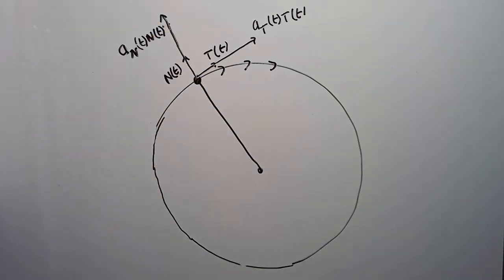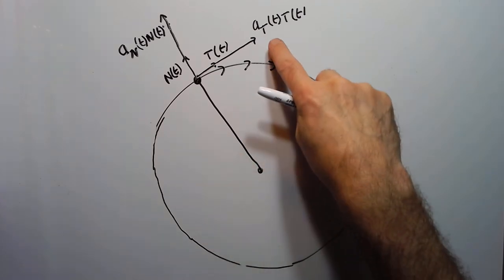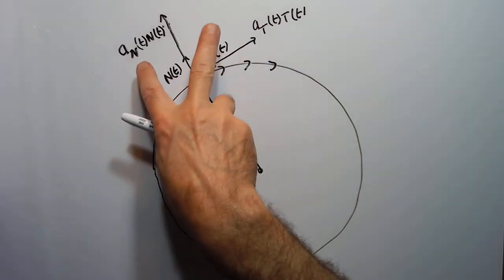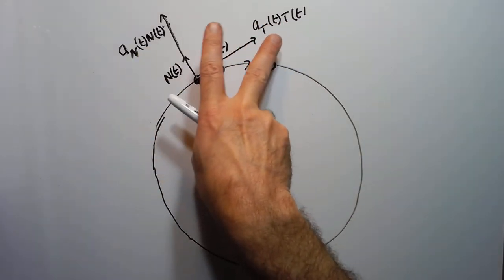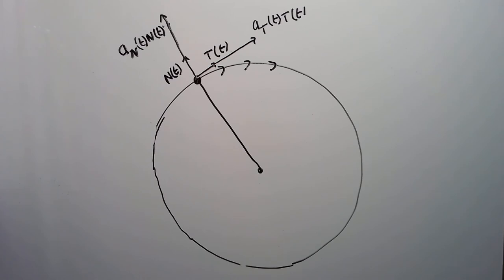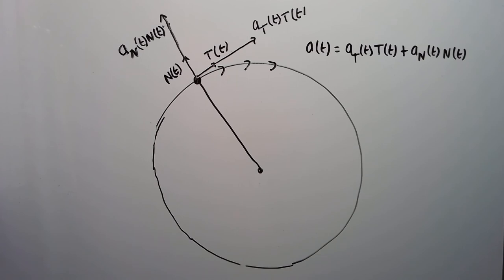So if the tennis ball is swung faster and faster, you have acceleration along the tangential direction, but you always have acceleration along the normal direction. The total acceleration is the sum of these two components. That's the idea, and we're done with Theorem 8 and with section 12.4.